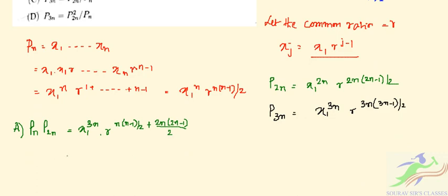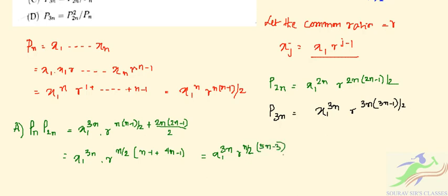Simplifying further, we get X_1^(3n) · R^(n/2 · (5n-3)). Checking this against P(3n) shows this is incorrect, so option 1 is wrong.